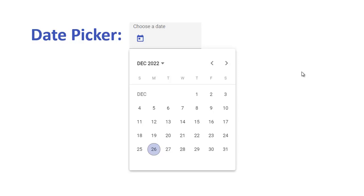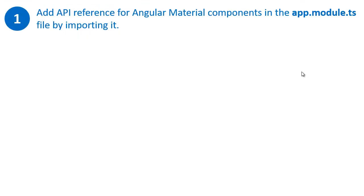There are mainly three steps for adding a date picker, like any other Angular Material UI element in an Angular application. The first step is we need to import four modules in the app.module.ts file.